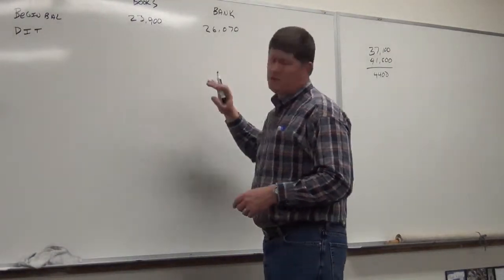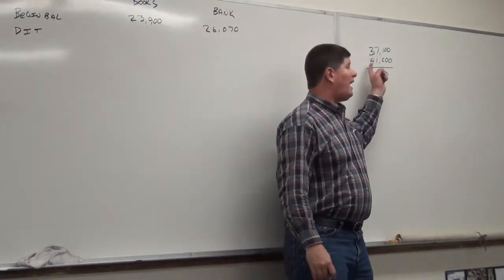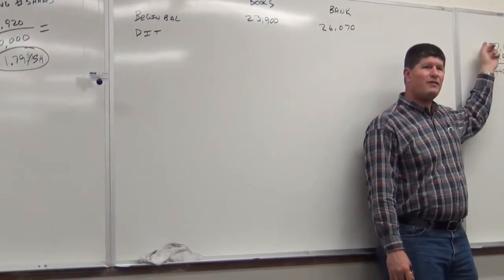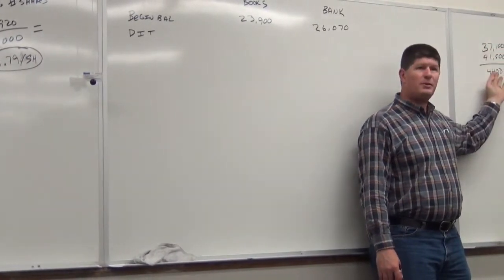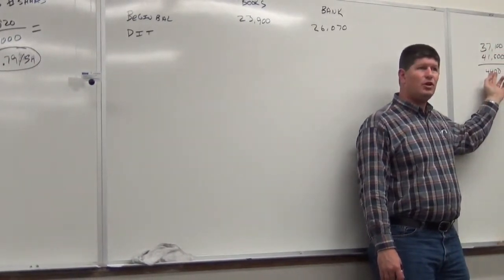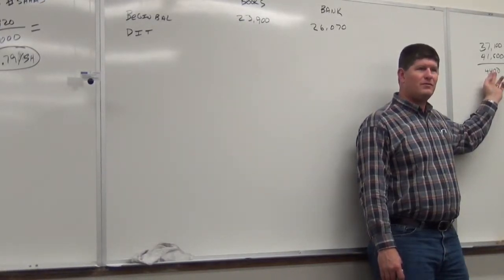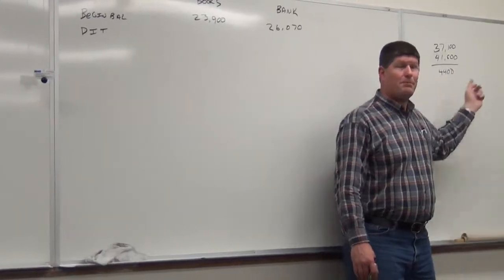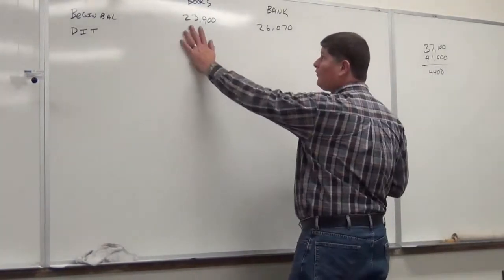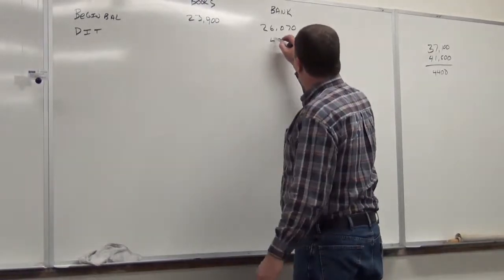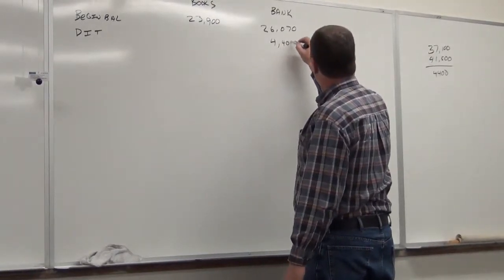So, let's then look at this. The book has deposits of how much? Or the bank has deposits of how much? $37,100. So, the bank has deposits of $37,100. And we have $41,500, I believe. Correct? Yes. Okay. What's the difference between the two? $4,400. Oh, $4,400. Okay. I'm assuming that those are deposits that are outstanding.